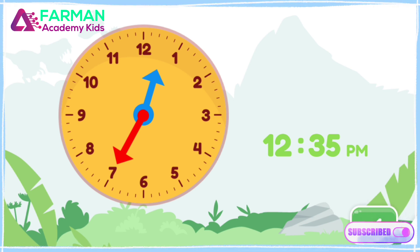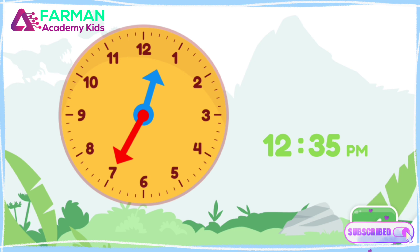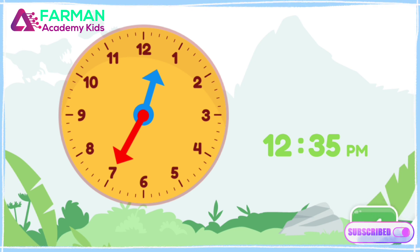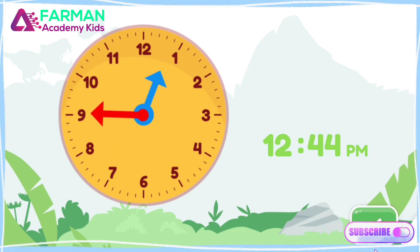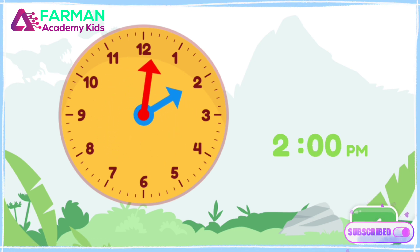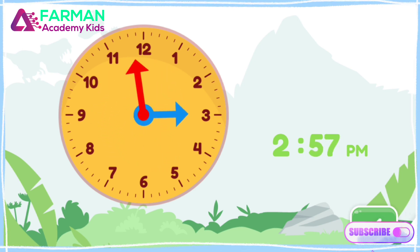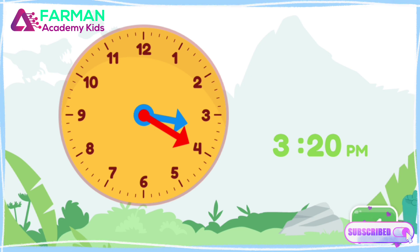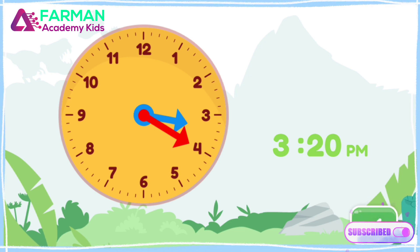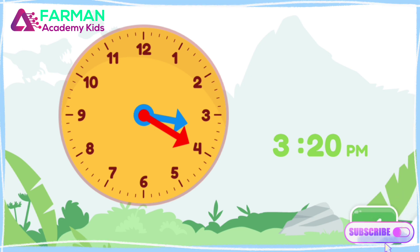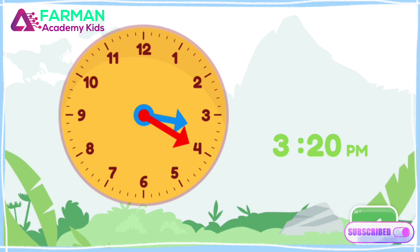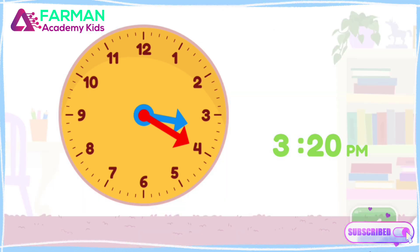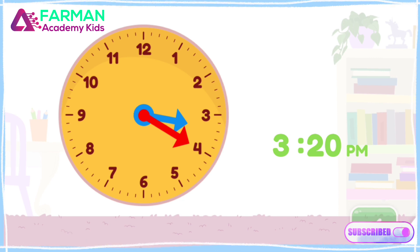Move the minute hand on the round clock to show 3:20 p.m. This is when school ends in the afternoon. You made the clock show 3:20 p.m. School is finished! Time to play out.